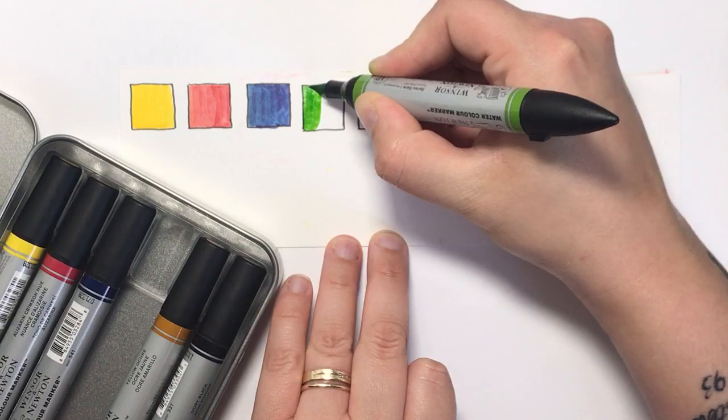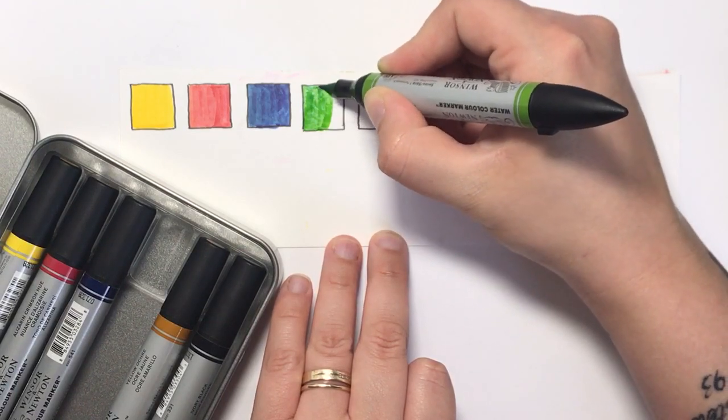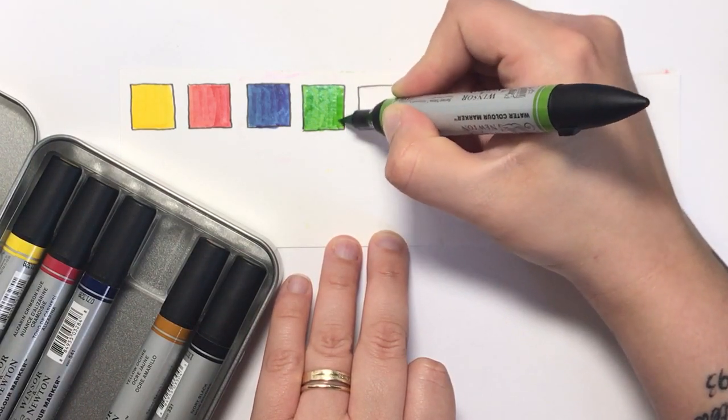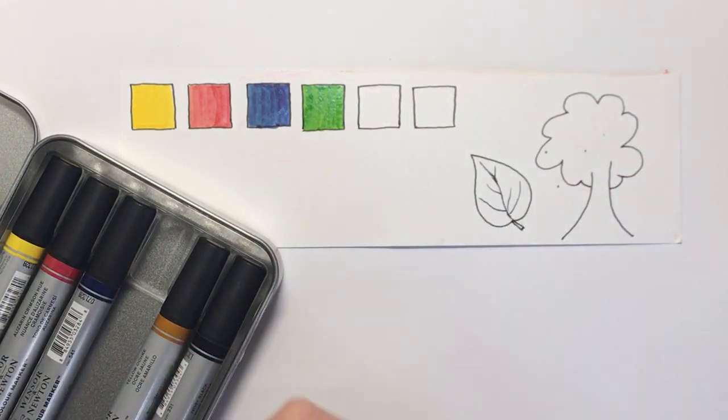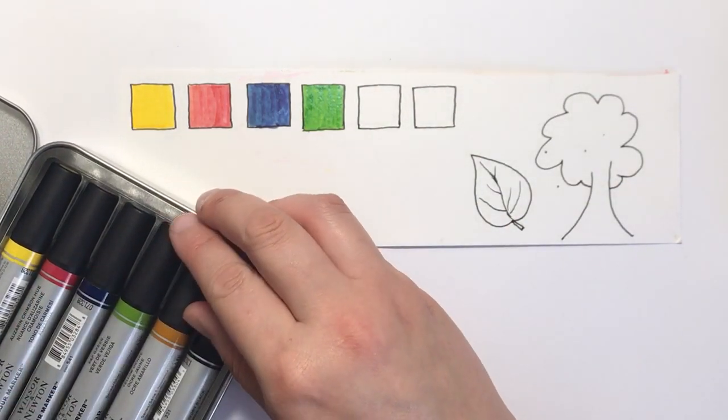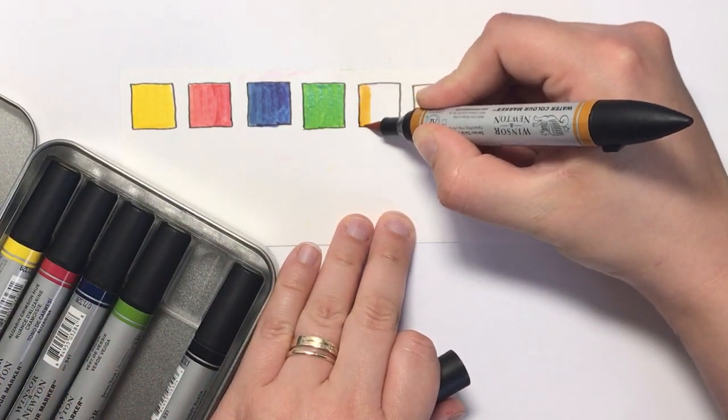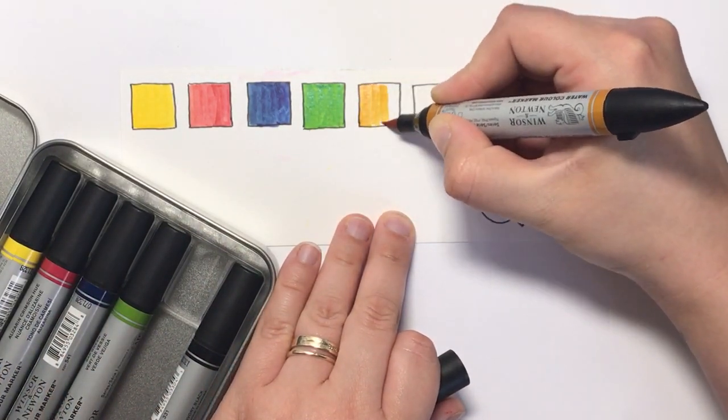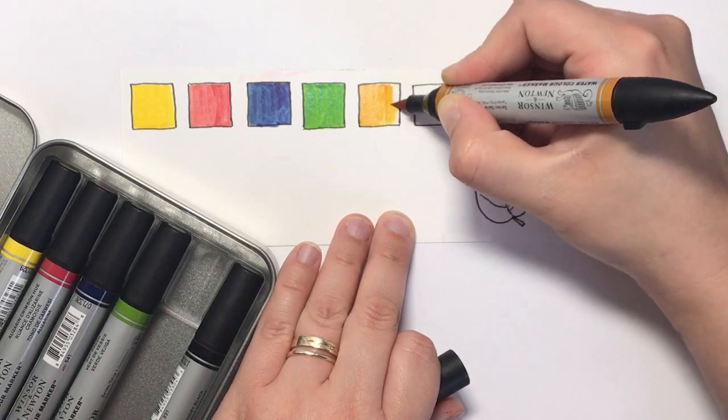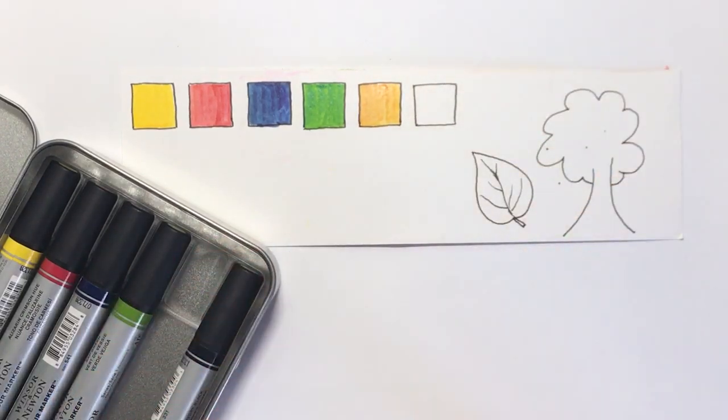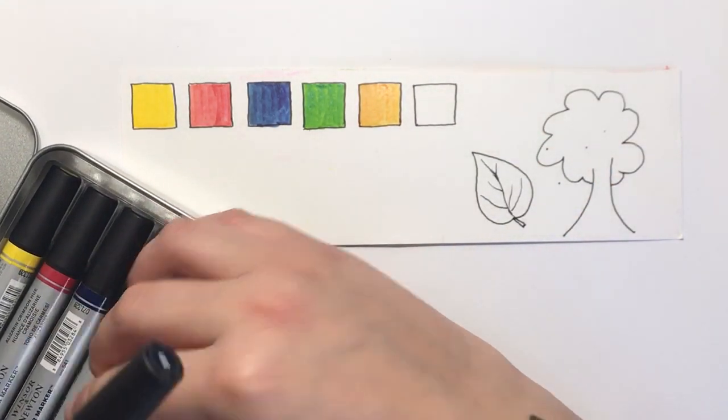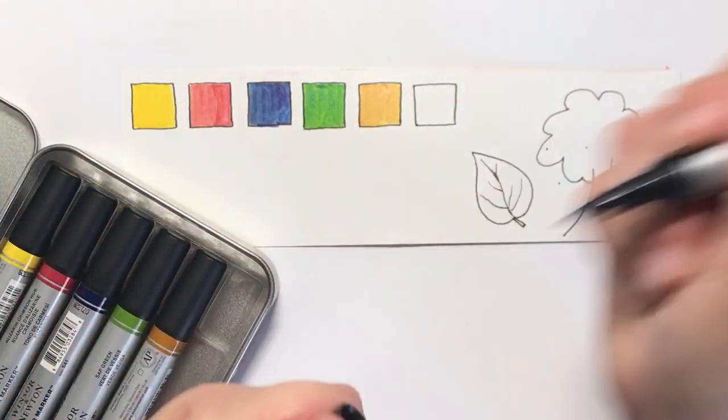This is sap green. As you can see, just beautiful thick juicy lay down on the page, and this one is yellow ochre.